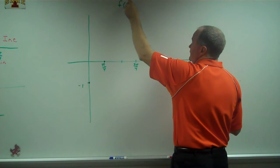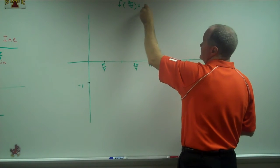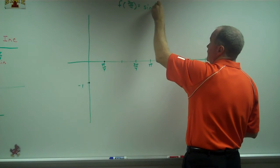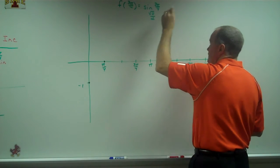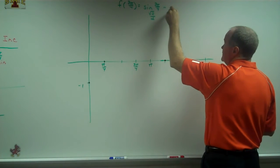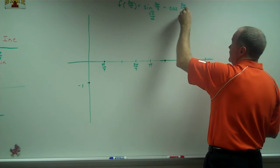f of 3π over 4. Sine x, sine of 3π over 4, which is √2 over 2, minus the cosine of 3π over 4,